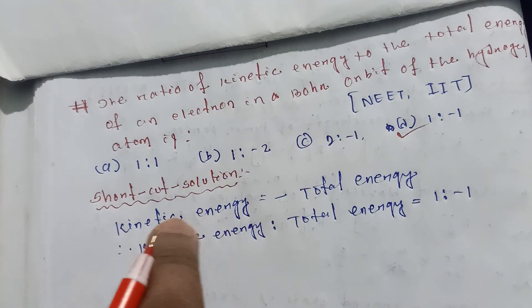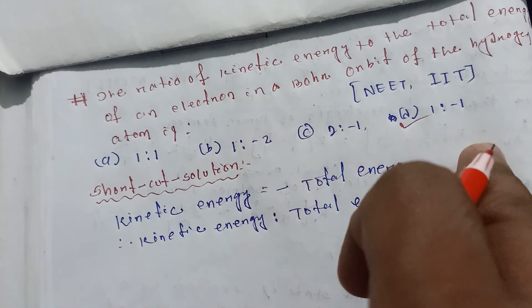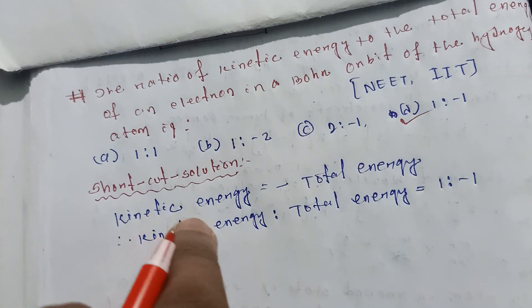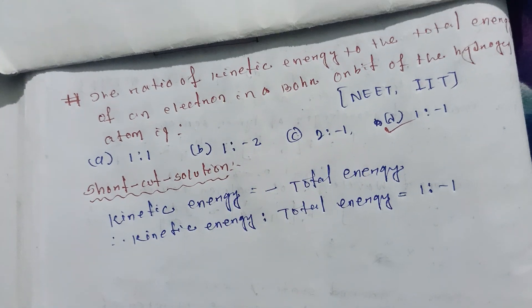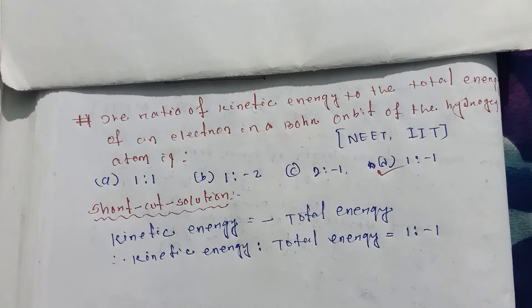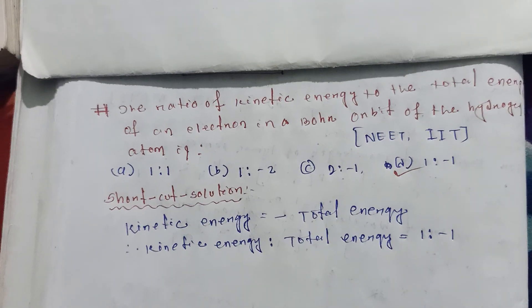We know that kinetic energy is equal to minus times total energy, so kinetic energy to total energy is equal to one is to minus one. So option D is correct.